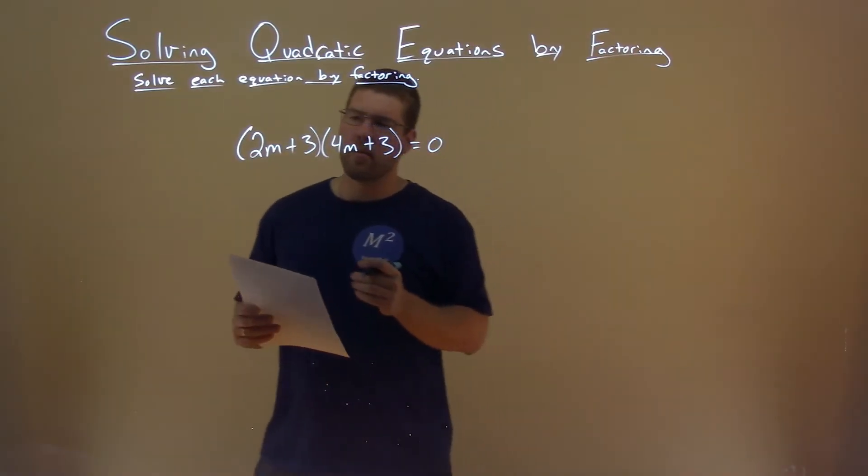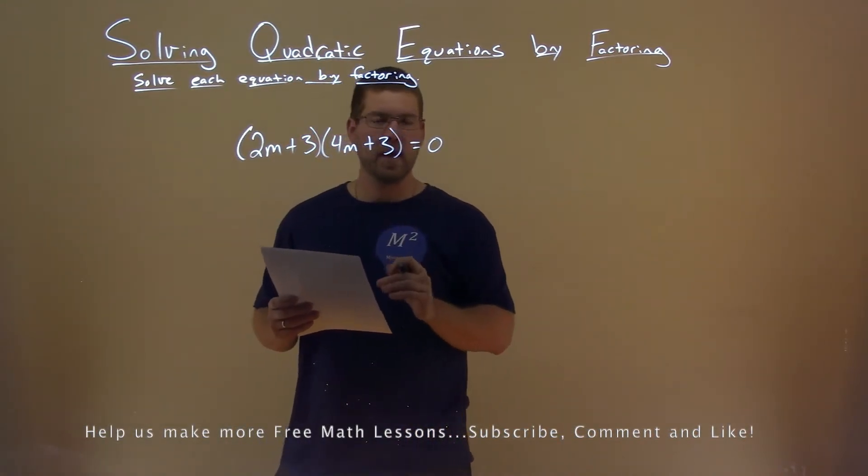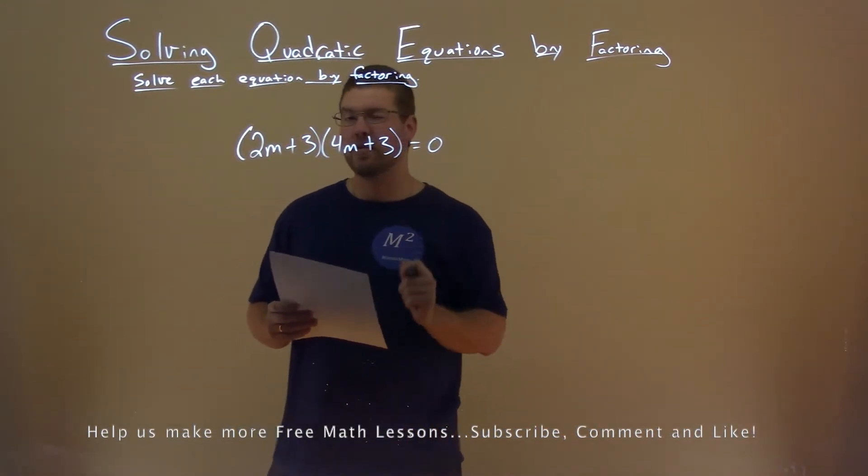We're given this problem right here. 2m plus 3 times 4m plus 3, and that's equal to 0, and we need to solve this by factoring.